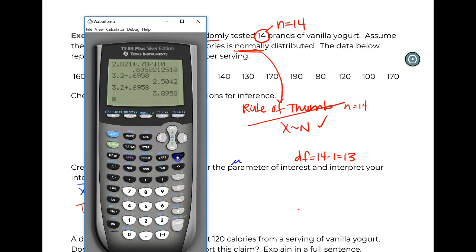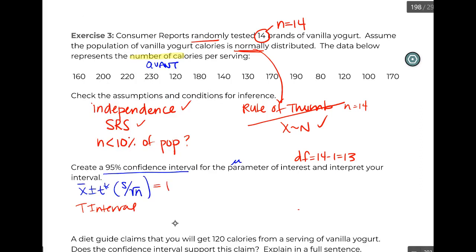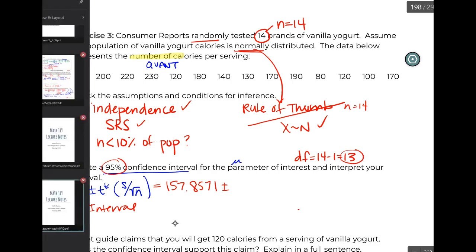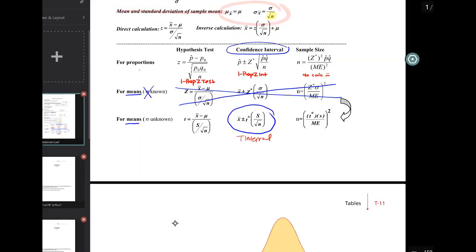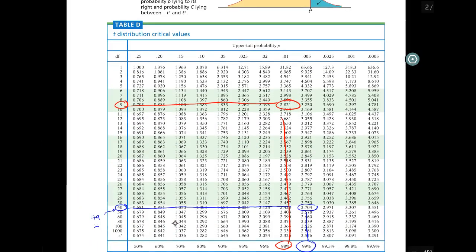So there we go. We go over to STAT, over to CALC, one-var stats, right? That's how we used to do this. So STAT, CALC, one-var stats, enter. So we got our x-bar: it's 157.9871. We could go get our t-star. We're looking at 95 percent with a degree of freedom of 13. So let's go grab that. 13, 95 percent. Let's get rid of all this other stuff that's distracting us. 2.160.